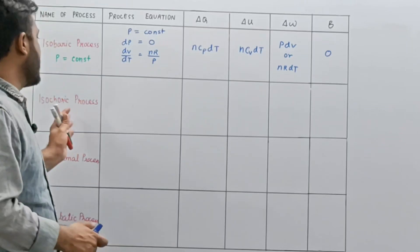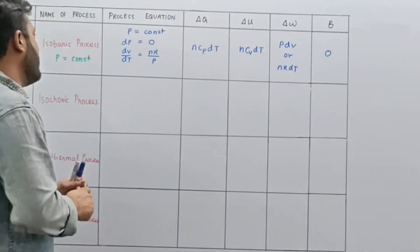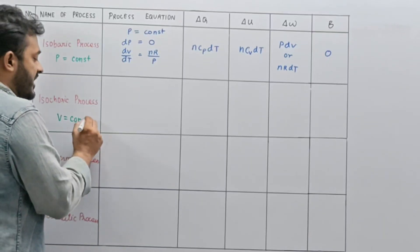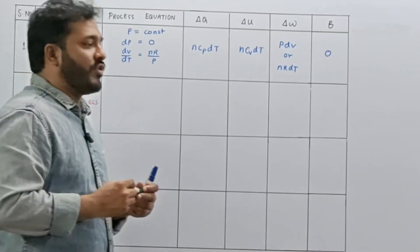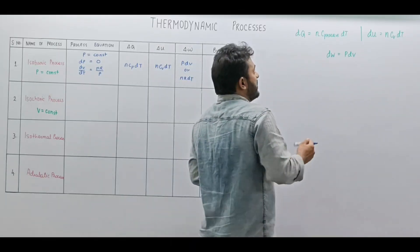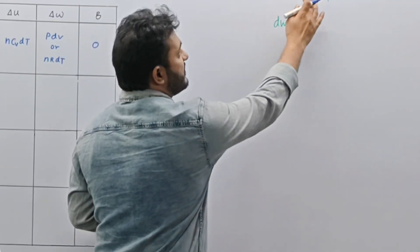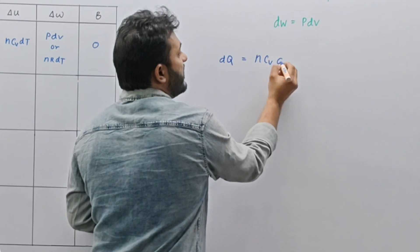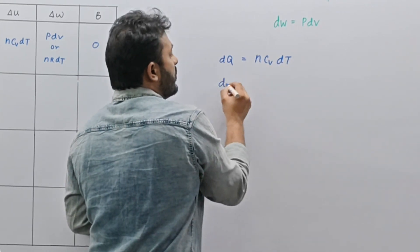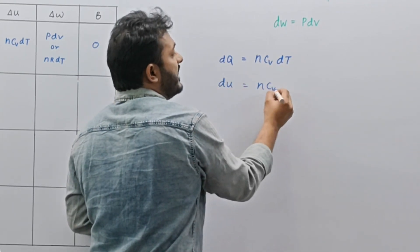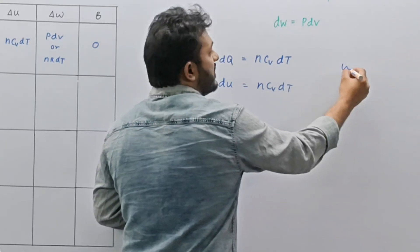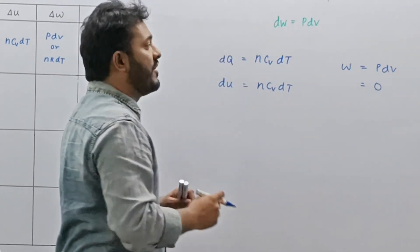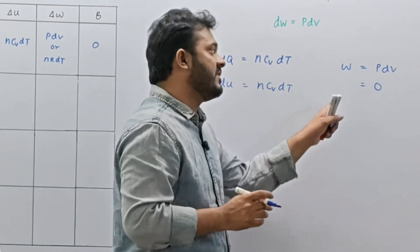Now let us get started with the isochoric process. When we say the process is isochoric in nature, we say volume is constant. For constant volume, DQ equals N C-process DT, which becomes N CV DT. DU is also N CV DT, and work done PDV equals 0 — so work done in an isochoric process is 0.